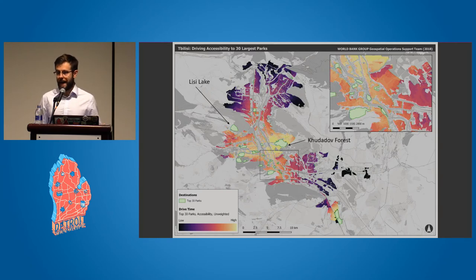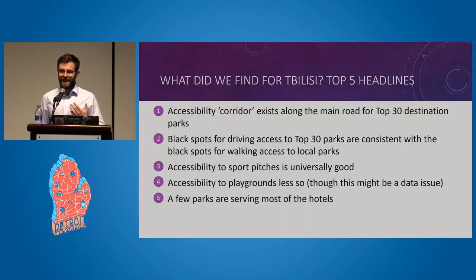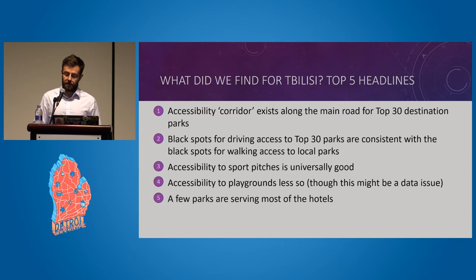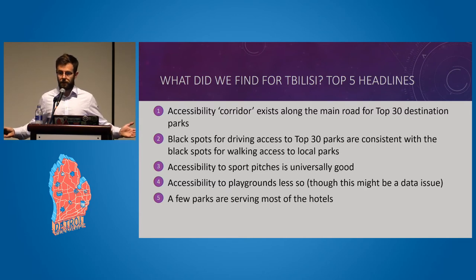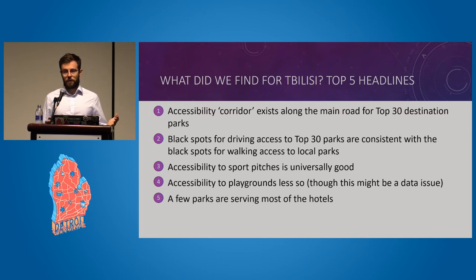We repeated this analysis for various recreational assets in Tbilisi — pitches, playgrounds, parks — and split the top 30 parks by size into a separate 'destination parks' asset class. Key findings: an accessibility corridor exists along the main road for the top 30 parks; black spots for driving access are consistent with black spots for walking access to local parks — if you're not served by the main corridor, you just don't have access to a park at all. Accessibility to sport pitches is universally pretty good with over 500 in Tbilisi, but accessibility to playgrounds for small children is less so — though we suspect this may be a data issue in OSM as playgrounds are more infrequently mapped.